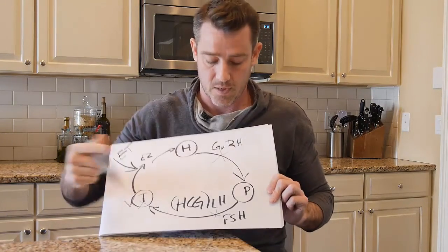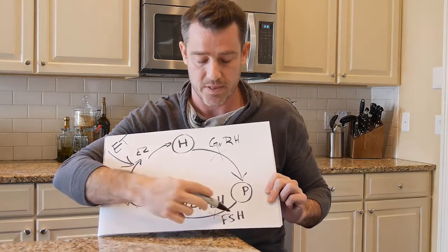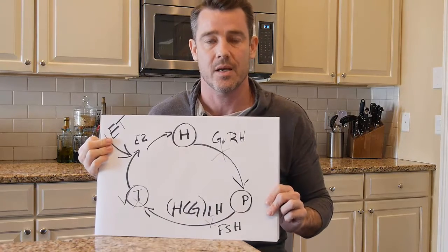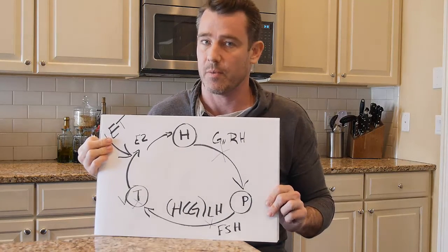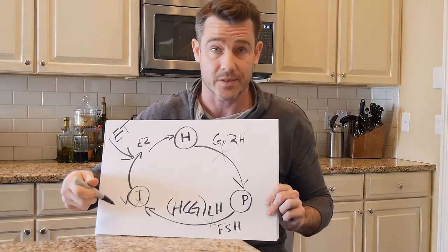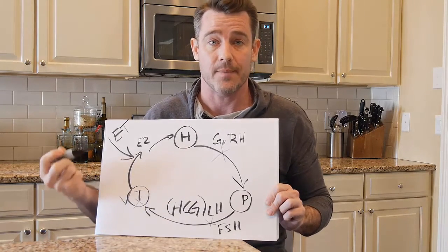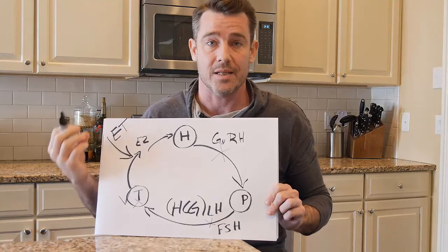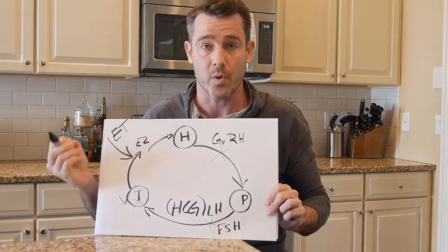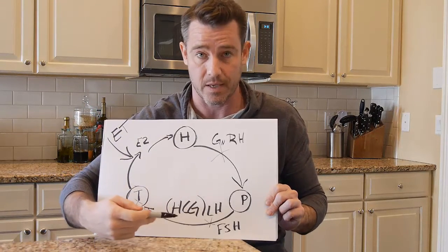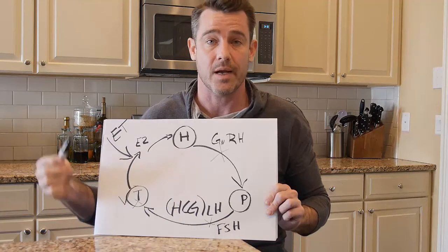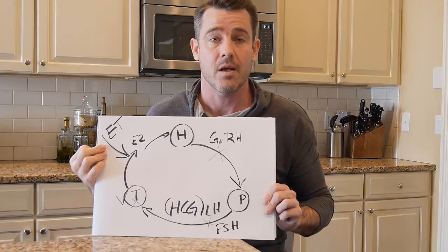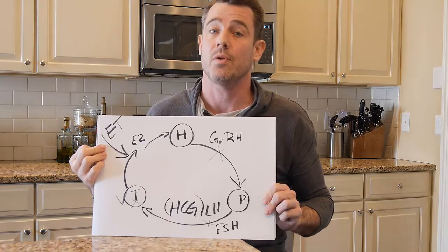Now, LH makes testosterone — but what does FSH make? It makes sperm. So in this situation, even with HCG preserving testicular tissue, we're not going to have a good healthy sperm count. The testicular function is going to be kept intact by the HCG and the entire tissue set in the testicles will be kept healthy. However, the Sertoli cell is not going to be engaged by follicle-stimulating hormone to actually create sperm, so that spermatogenesis function is not going to be called on, and sperm counts will be reduced greatly.